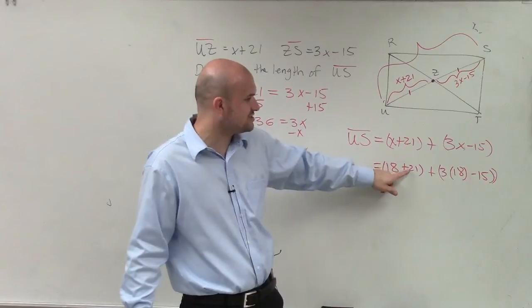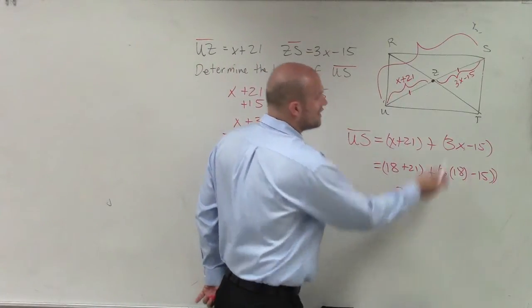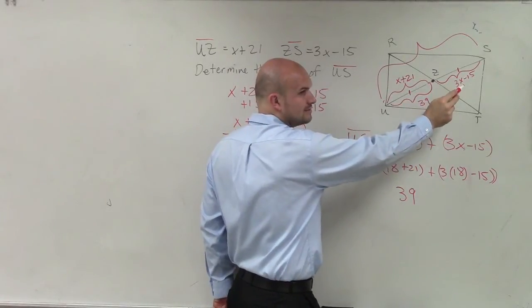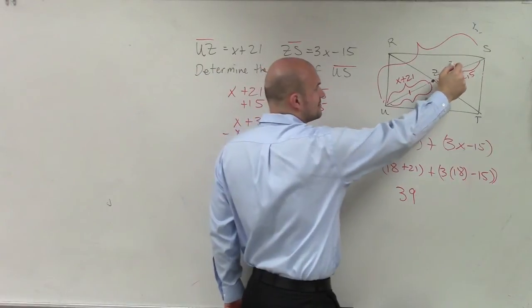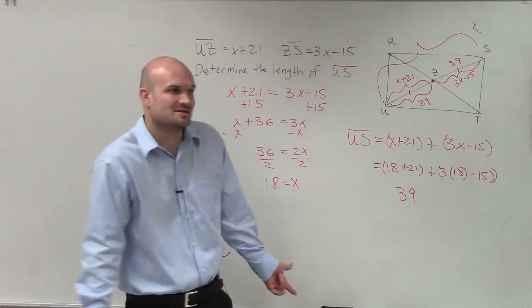Because if I already know this, if 18 plus 21 is going to be 39, and if I know that this length is 39, what does this length have to be? 39. Or you could do 3 times 18 minus 15, but guess what? You're still going to get 39.